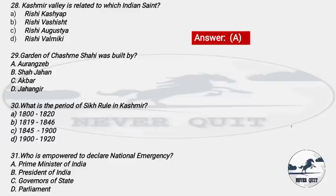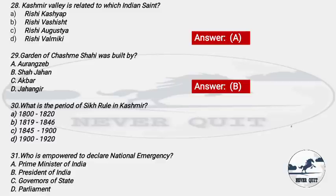Question 29: Garden of Chashma Shahi was built by — Options: A) Rangze, B) Shah Jahan, C) Akbar, D) Jahangir. The right answer is option B — Shah Jahan. Shah Jahan built Chashma Shahi. This is an important question for the exam.